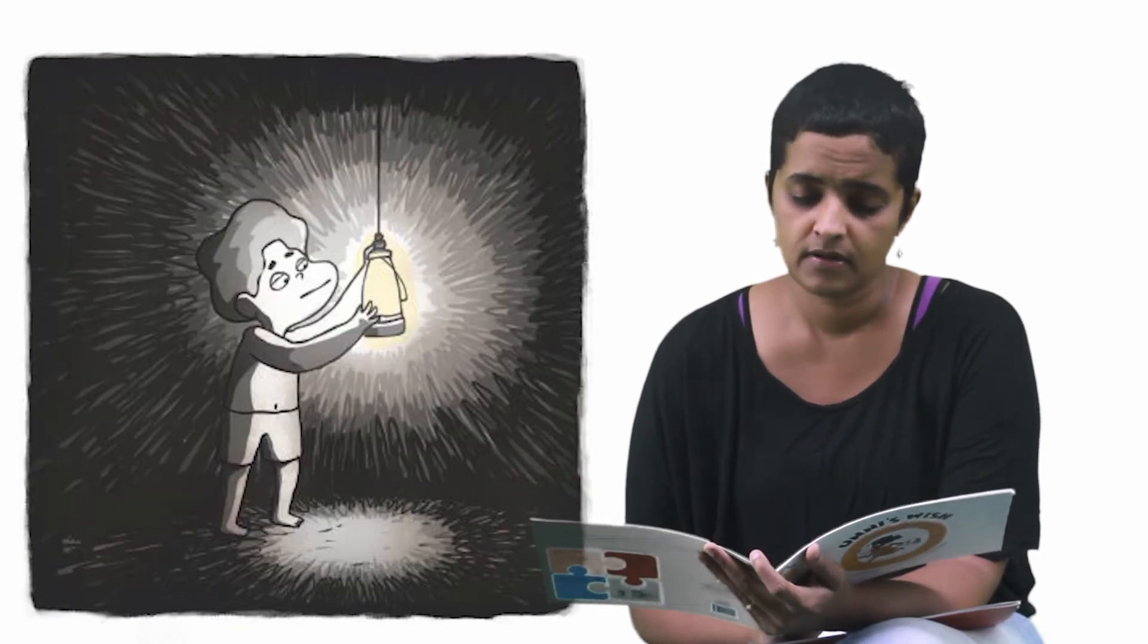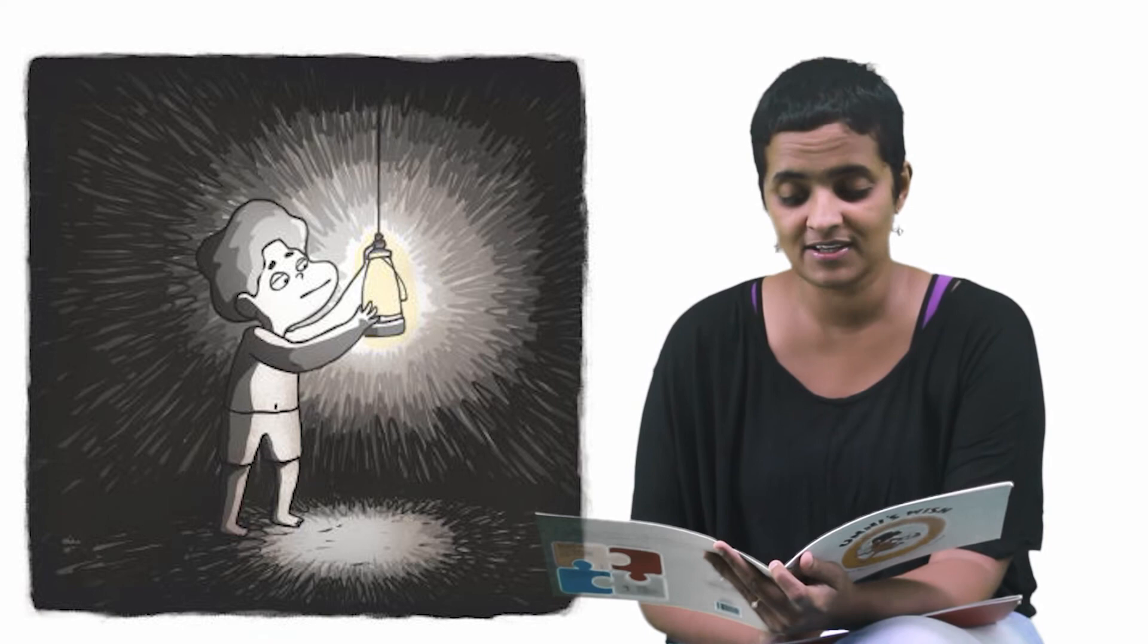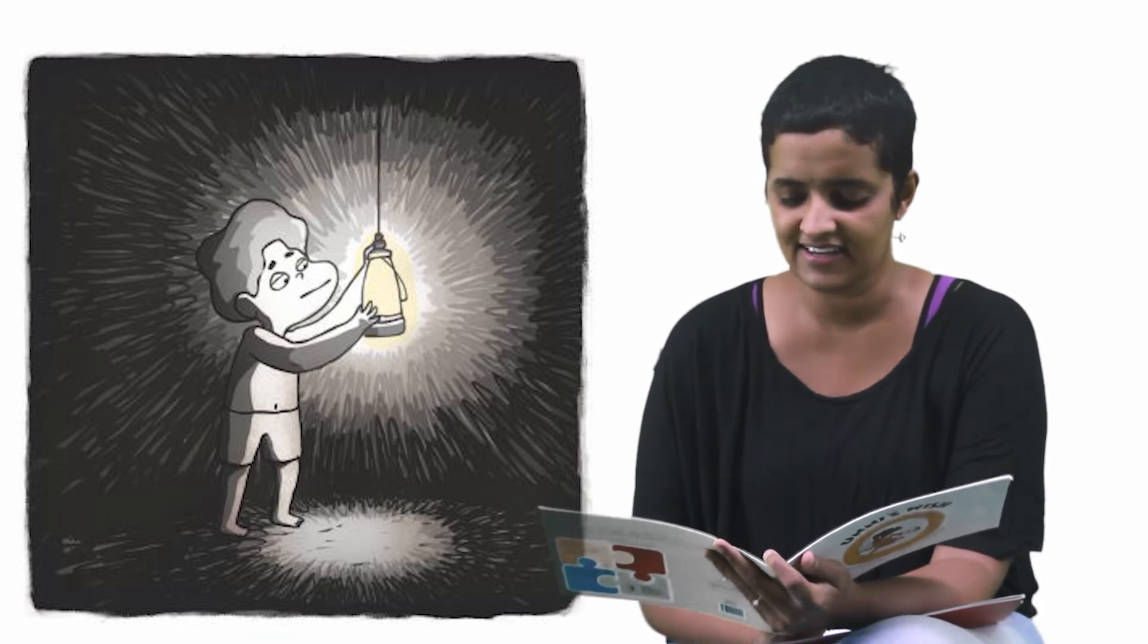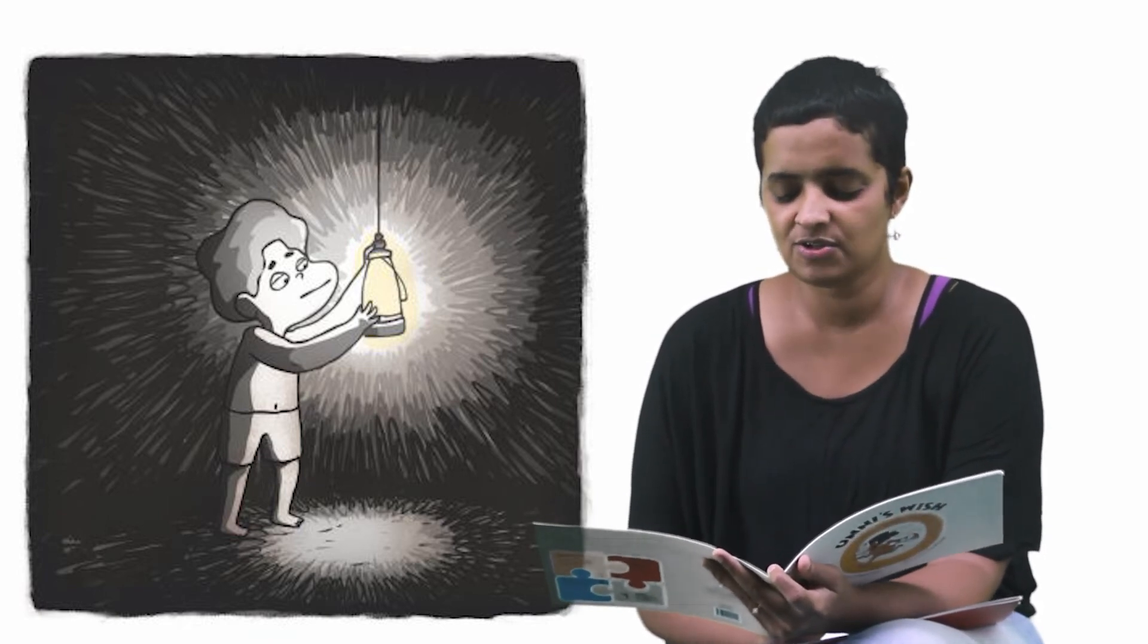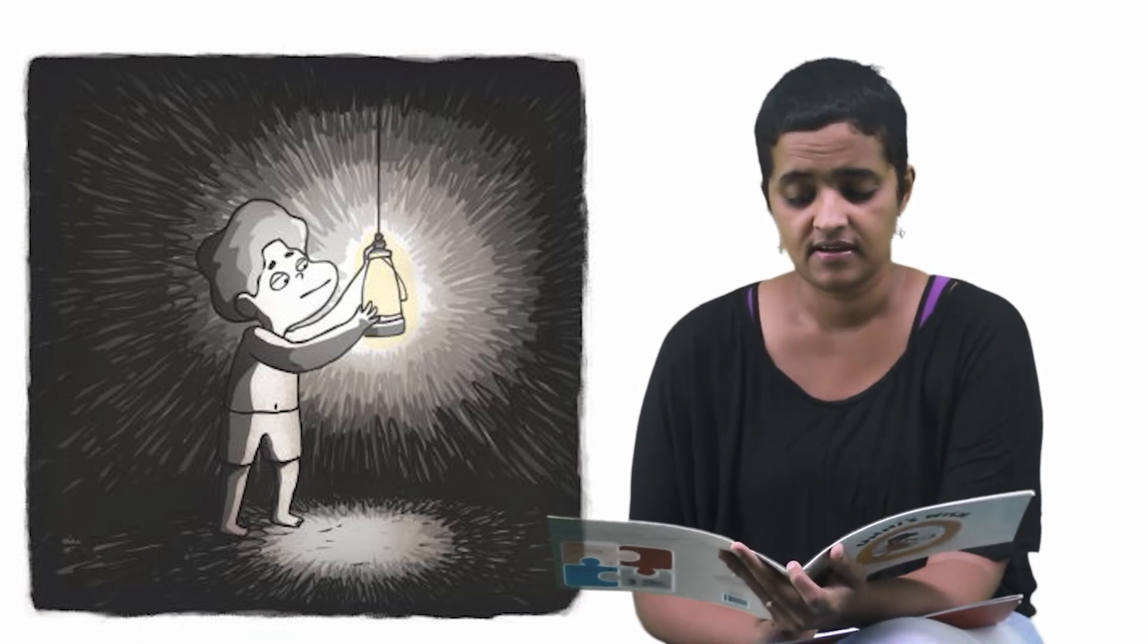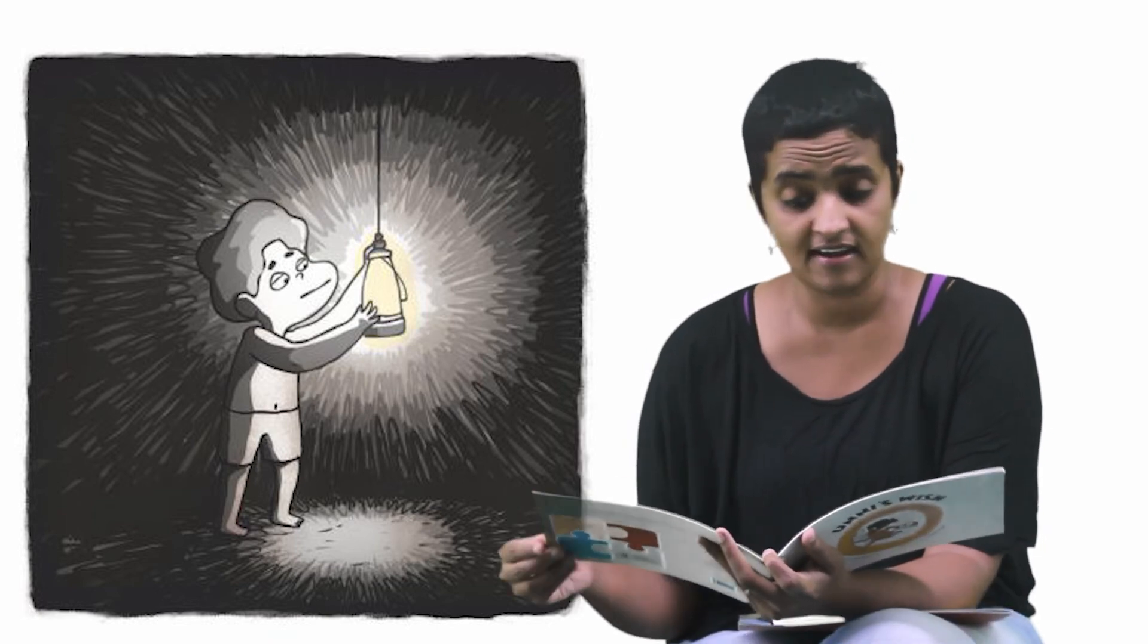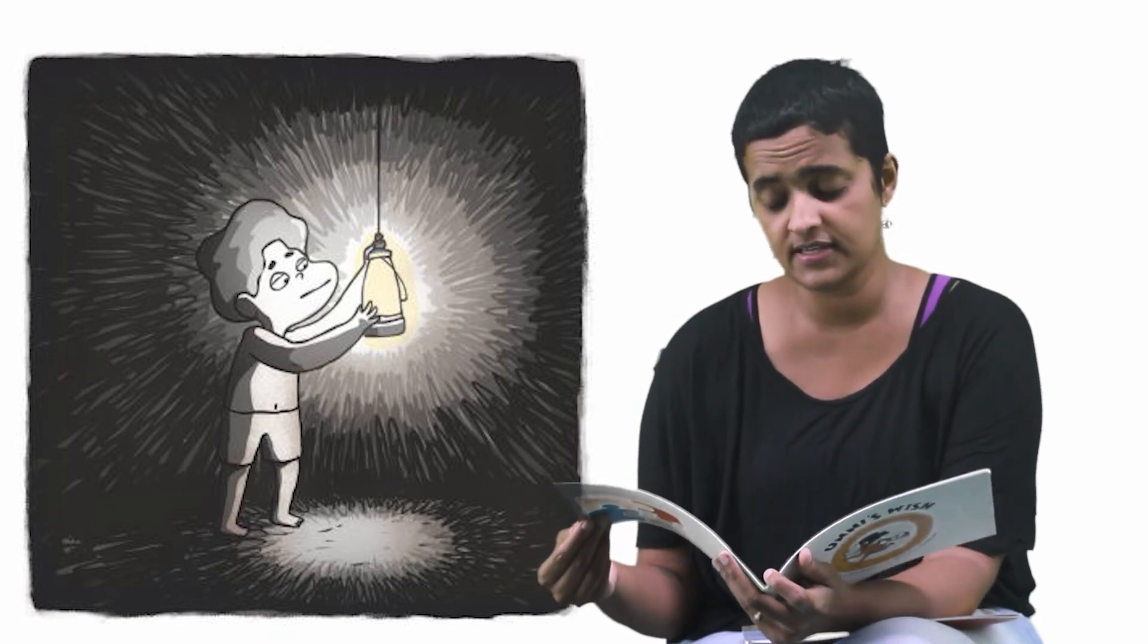Unni is disappointed. After school, the two friends race back to Ammu's home in the coffee estate. The sun is setting. Ammu turns on the tube light in her house. I'm going to study now, she says. It's getting dark. Let me get home quickly. I need to light the kerosene lamp, says Unni, sighing.